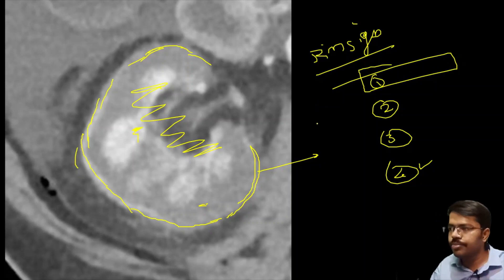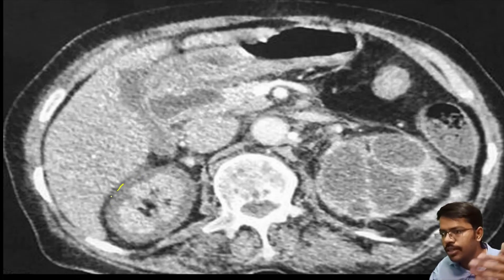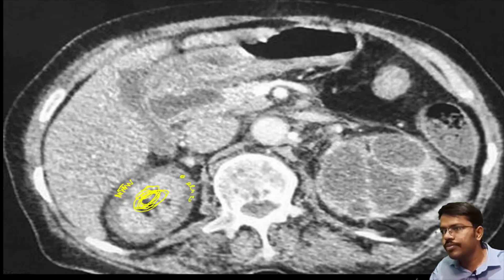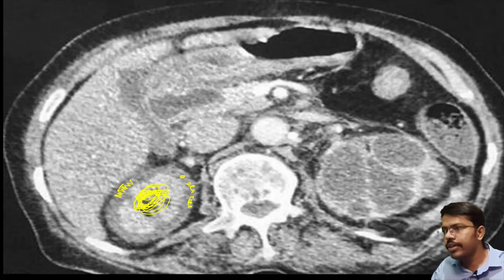For the reverse rim sign, even the cortical perforating branches show no enhancement — only the medulla is getting enhanced and the outer cortex is not enhanced. So this is the reverse rim sign: the inside part is enhanced and the outside part is not enhanced.